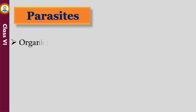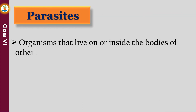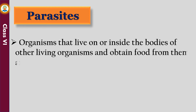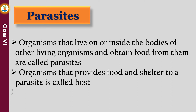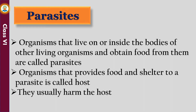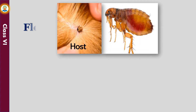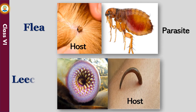Organisms that live on or inside the bodies of other living organisms and obtain food from them are called parasites. The organism that provides food and shelter to a parasite is called the host. Parasites usually harm the host. For example, fleas and leeches suck the blood of human beings and other animals.